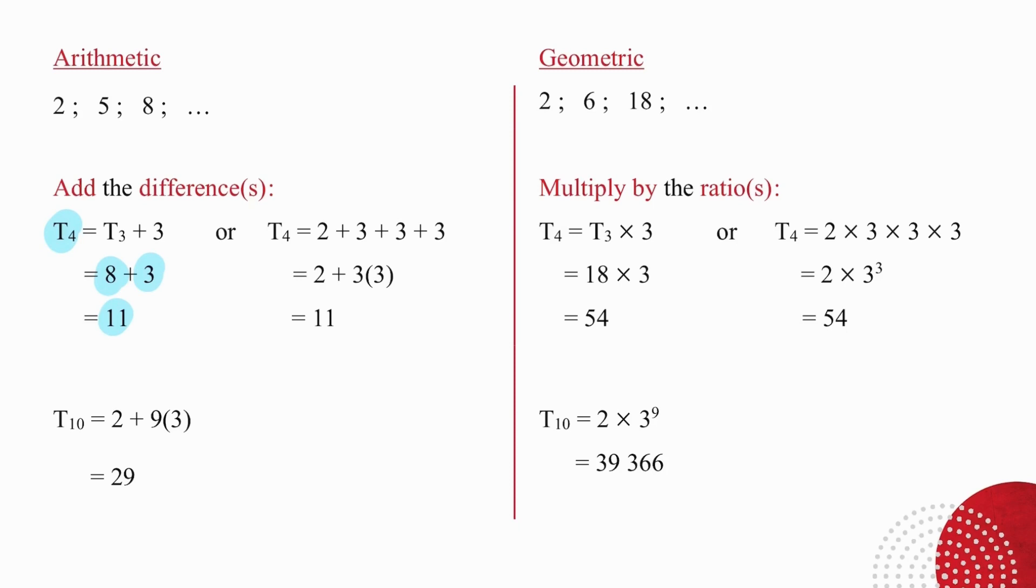And the method basically takes into account that there are a certain number of differences that come into play for each term. So with the fourth term, you're going to take into account the fact that you have the first term value and one less difference than the position. So the fourth term is the first term plus three differences added on, which gives you this value of 11. When you then get to the 10th term, you simply have to take note of the first term and nine differences, which gives you the result you need.